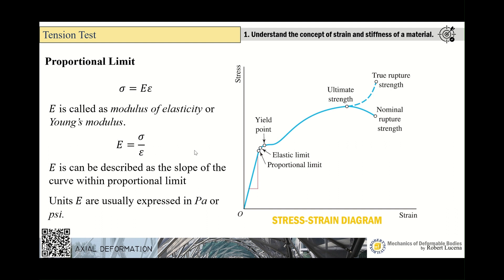E is described as the slope of the stress-strain curve within the proportional limit. Its unit is Pascal or psi, since it is stress over the unitless strain. If you have the opportunity to draw the stress-strain curve, within the proportional limit you will see a straight line whose slope gives the modulus of elasticity.